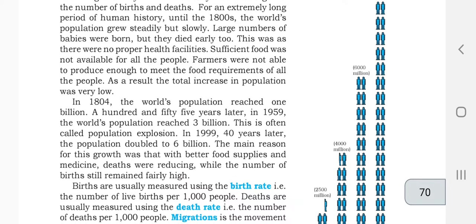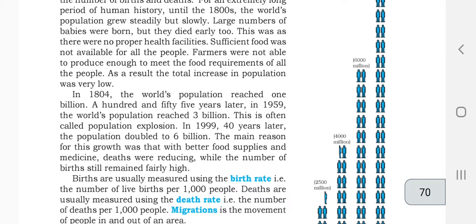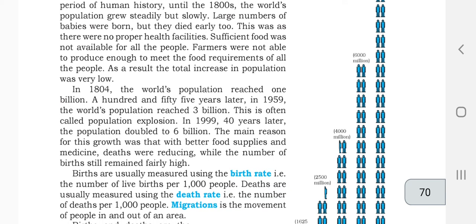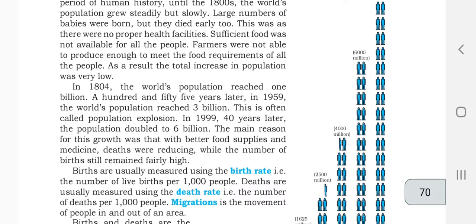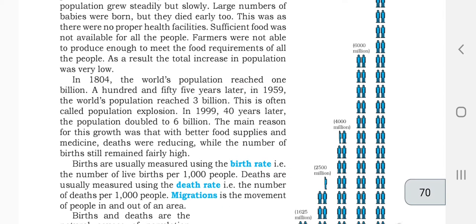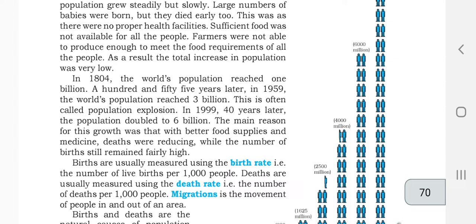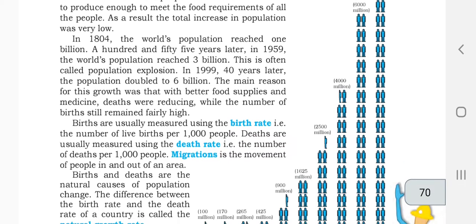Population increase was very slow overall. In 1804, the world's population reached 1 billion. Then 150 years later, in 1959, the world population reached 3 billion. From that point the graph is going up sharply — the birth rate is now very high. This is often called population explosion, where in a very rapid and fast manner the birth rate is moving. In 1999, 40 years later, the population doubled to 6 billion.